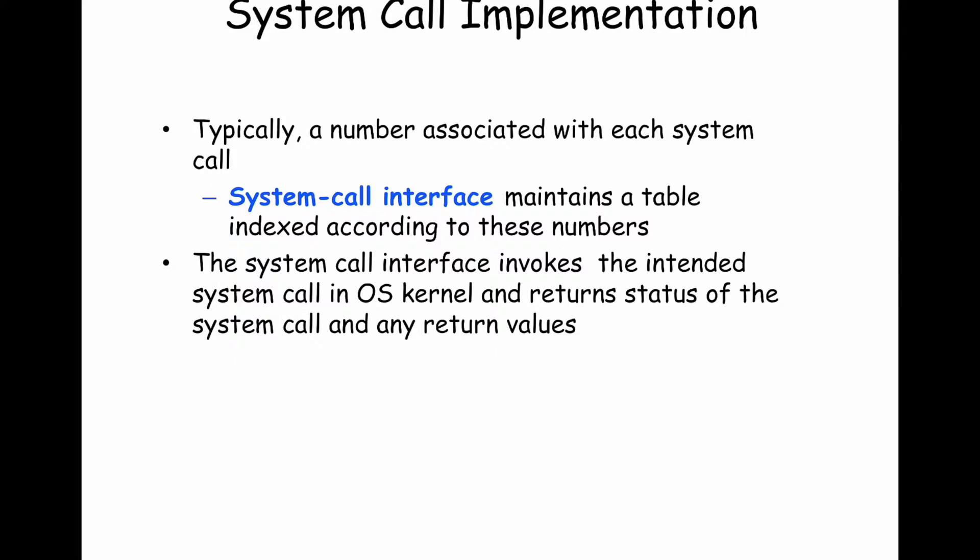This interface is implemented in the operating system runtime as a table of system calls. From the perspective of the operating system, read might be system call 13, write might be system call 14, socket might be system call 28 — I just made those numbers up. Literally, the operating system indexes into this table of system calls, and you can add to this table if you have the Linux source code. It then performs the details of what that system call does underneath the covers.